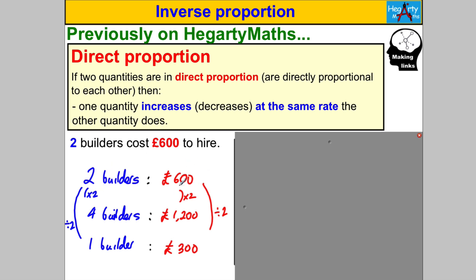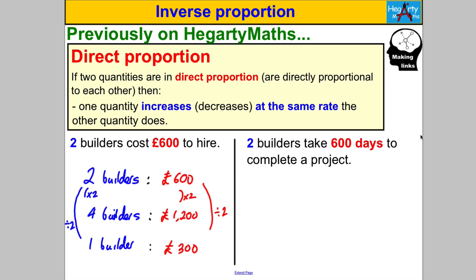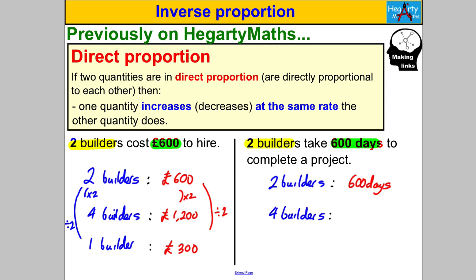But what about this scenario? Two builders take 600 days to complete a project. Is that the same or different? We've got two builders and 600 days — I could write this as the ratio: two builders, 600 days. Now, if you doubled the number of builders to four, what happens to your number of days to complete the project? Well, it's going to halve — you divide by two — and it would take 300 days.